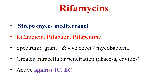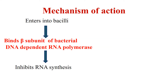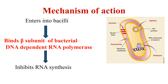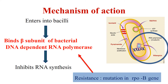Rifampicin has great intracellular penetration even into abscesses and cavities. It is active against intracellular, extracellular, as well as slowly and intermittently dividing organisms. Rifamycins act by inhibiting RNA synthesis in mycobacteria. They bind to the beta subunit of bacterial DNA-dependent RNA polymerase, inhibiting RNA synthesis. This DNA-dependent RNA polymerase is coded by the rpoB gene, so any mutation in this gene leads to resistance against rifampicin.